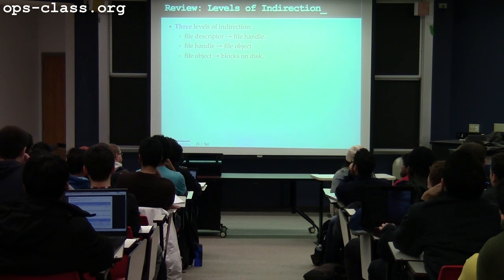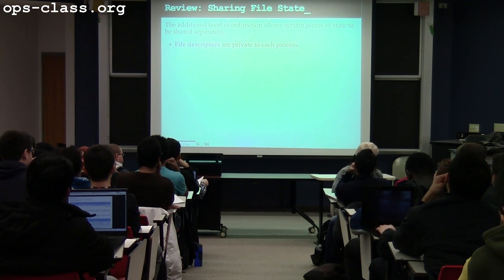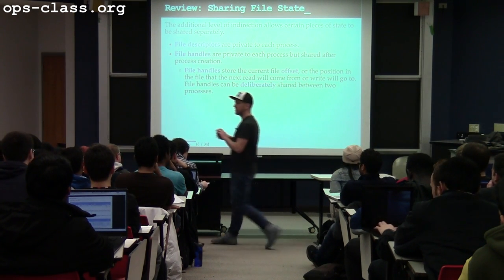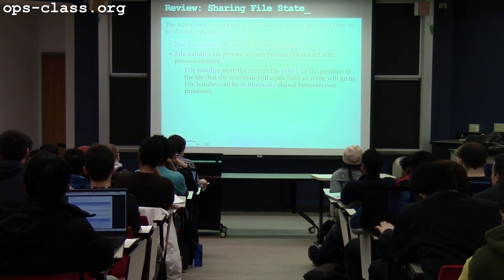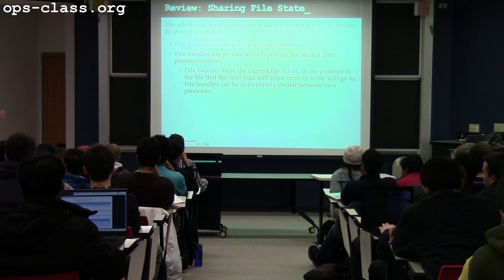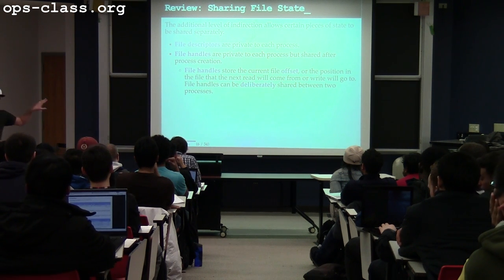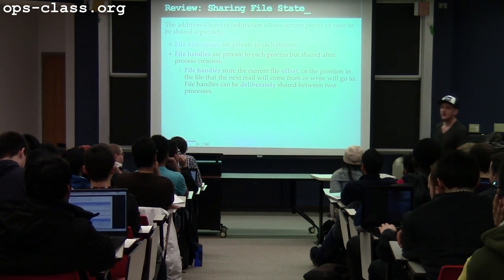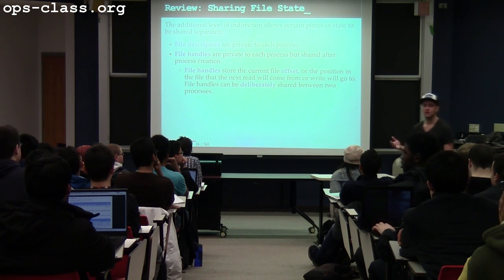Someone asks: does the file handle hold any other information? Yes, it does, and the information it holds is important. So the file handles have information in them. When we added a level of indirection, we split some information into new places. Once I have three levels of indirection, I have another place to put things. Specifically, file handles store the current file position. The file position is the result of where the file pointer ended up based on past operations.